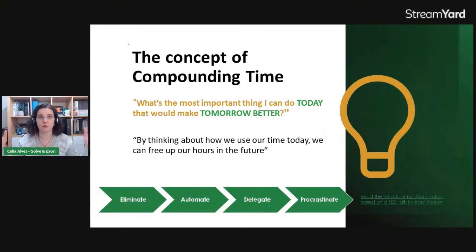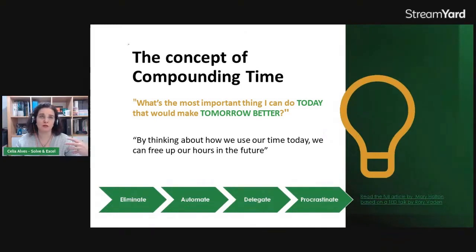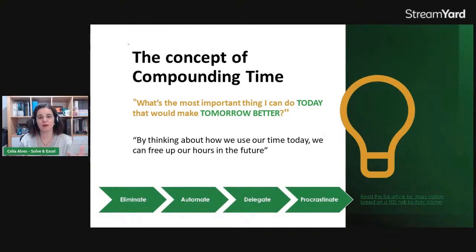Instead of thinking 'I need to spend one week to automate everything all at once,' another approach is: let's think about what is easier to simplify, or what is more urgent and easier for me to do right away. Apply the time to do that. Next week you will have that extra time to apply to something else. Like that, you put a little bit of time today, a little bit of time next week, and those actions start freeing up time in your future.